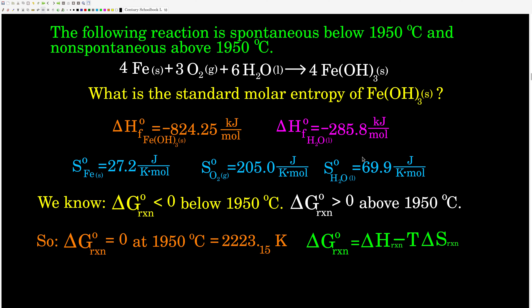Okay, here's our first example. We're told that this reaction is spontaneous below 1950 degrees Celsius and not spontaneous above 1950 degrees Celsius. That means at 1950 Celsius is our equilibrium point. We want to find the standard molar entropy of iron(III) oxide. This is a balanced equation. We're given the heat of formation of iron(III) oxide and liquid water. We don't need iron or oxygen because the heat of formation of an element in its standard state — solid iron and gaseous oxygen — is zero.